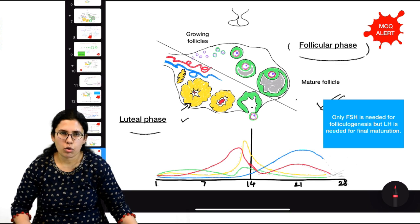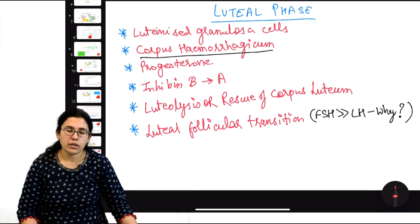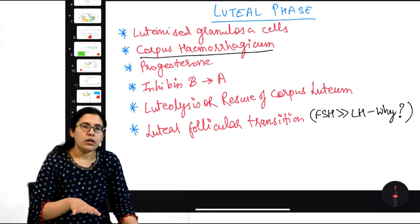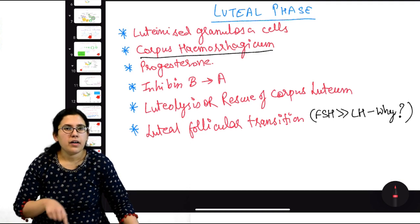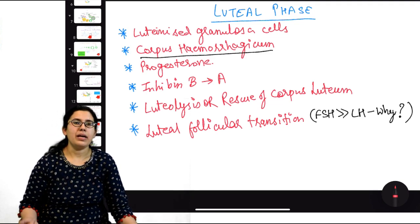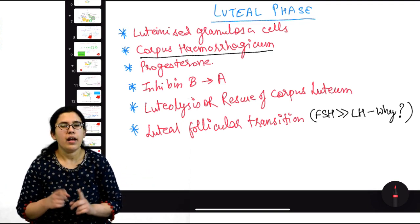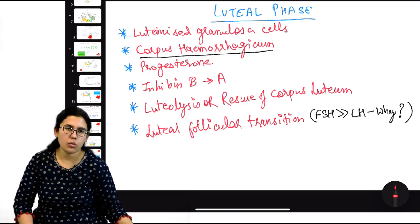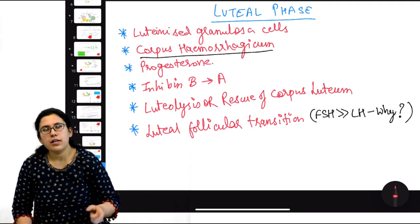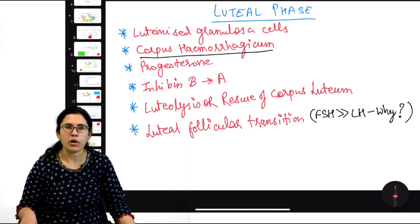The luteinized granulosa cells (corpus luteum) under the effect of LH also produce inhibin A. Important distinction: in the follicular phase, granulosa cells under the effect of FSH produce inhibin B. But here, luteinized granulosa cells under the effect of LH produce inhibin A. Both inhibin A and inhibin B have the same function — to inhibit FSH.